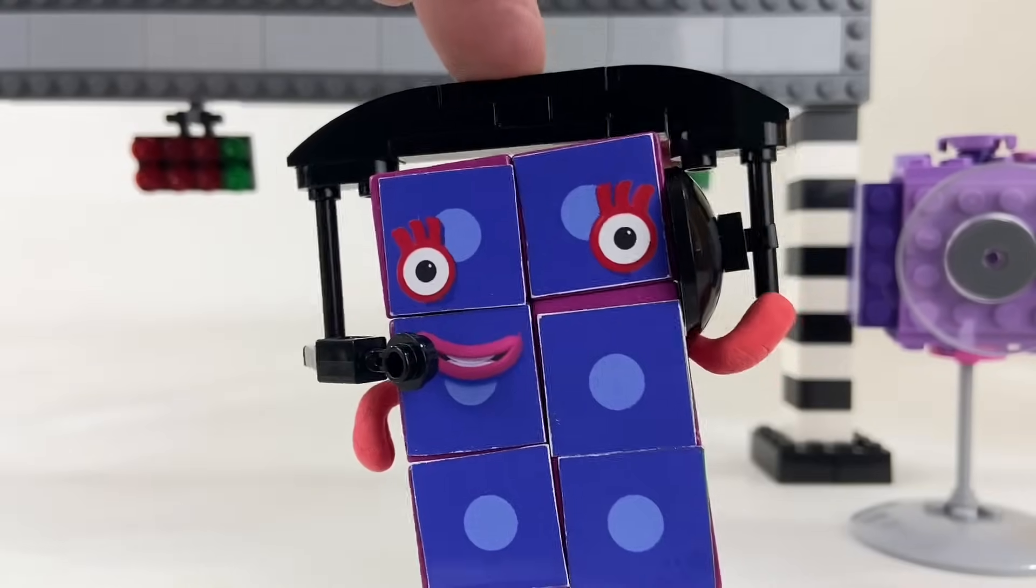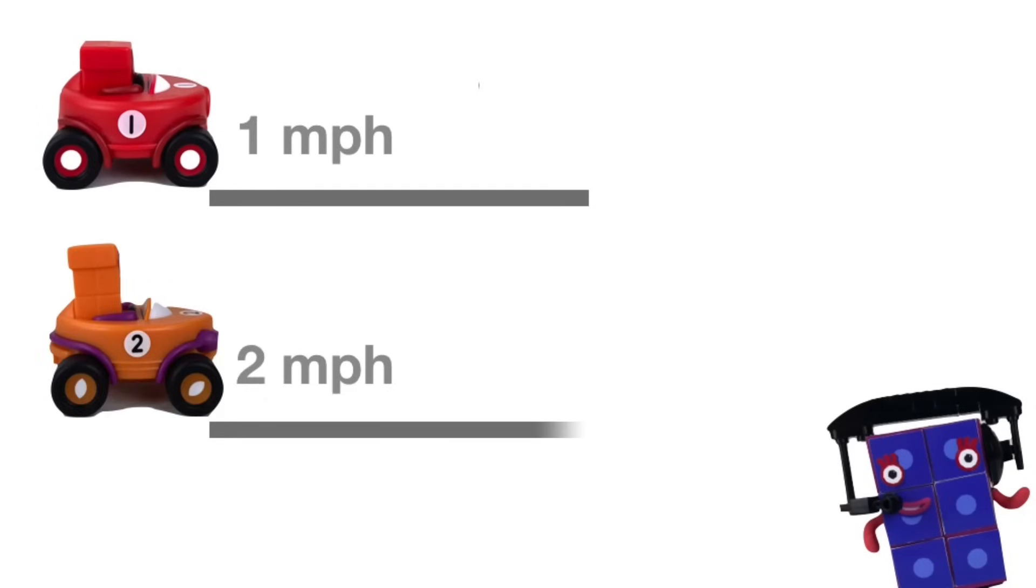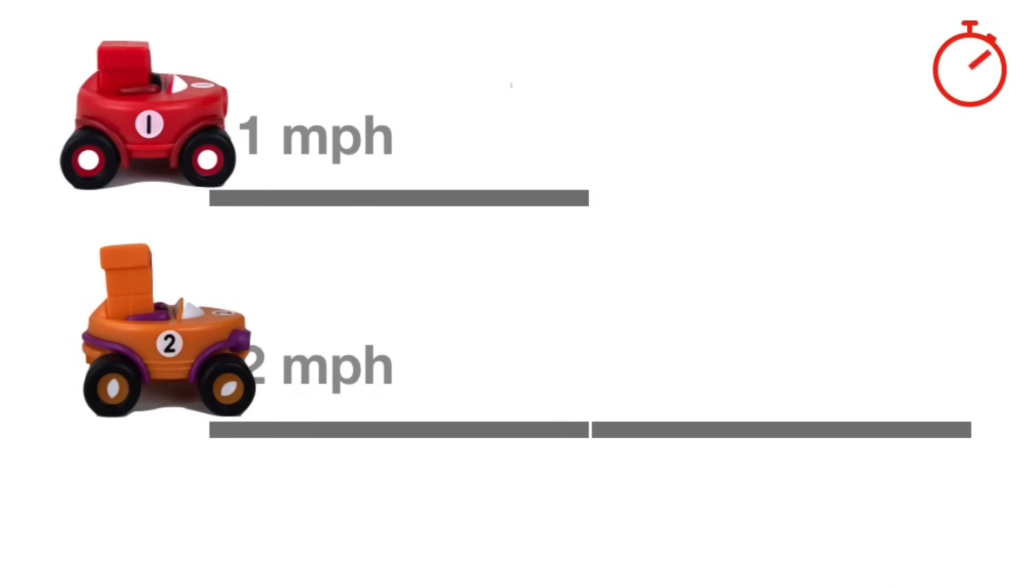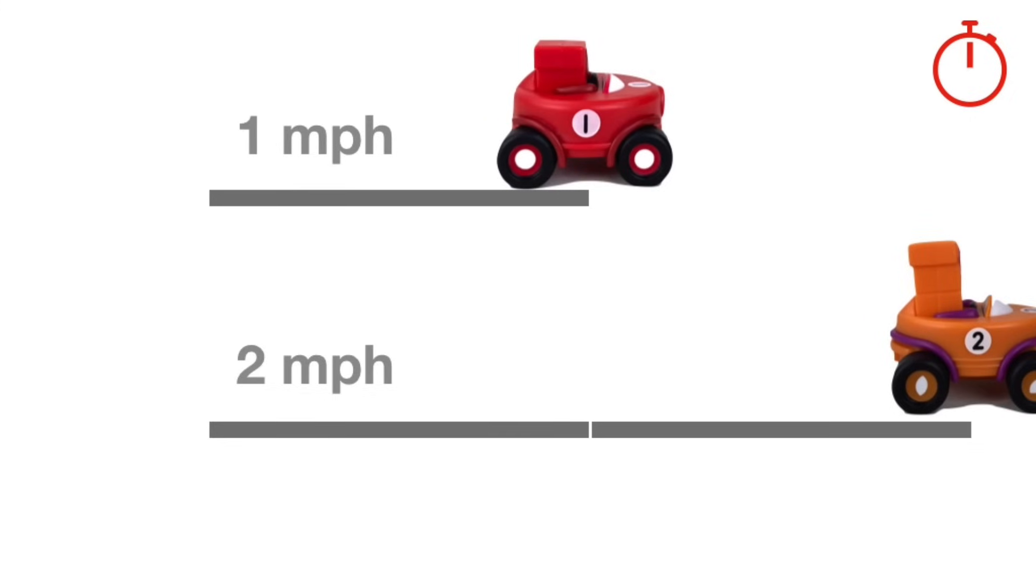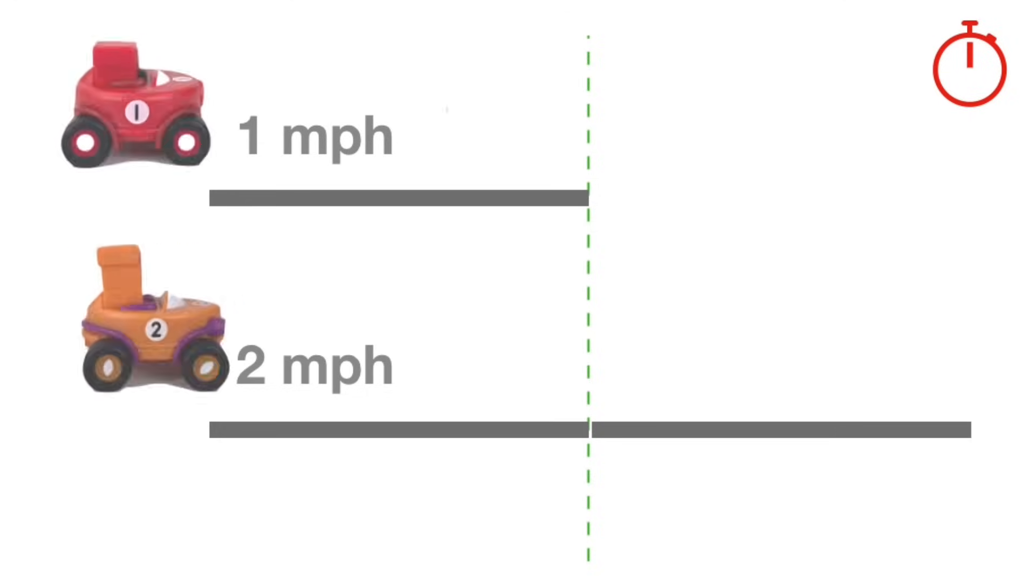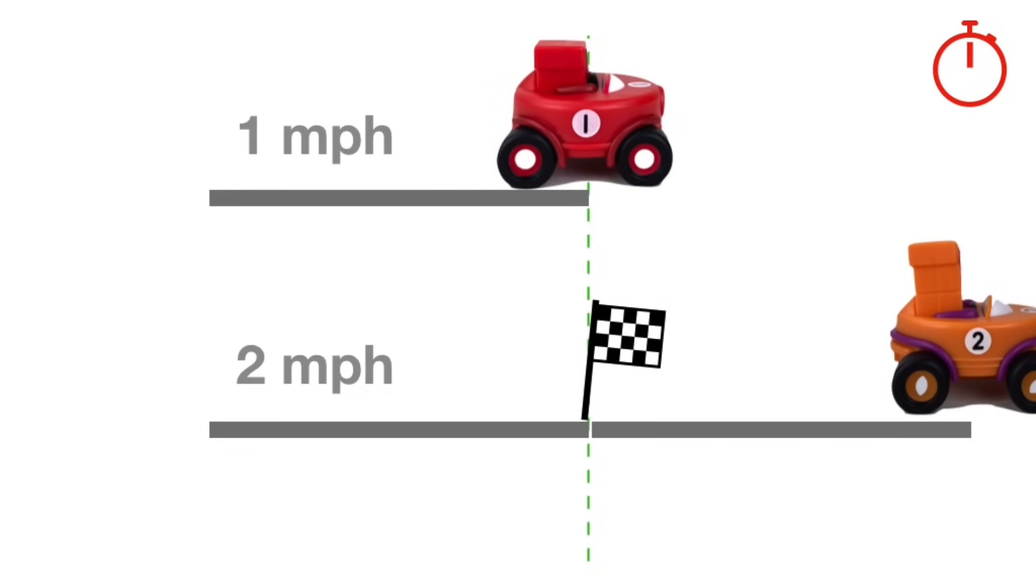Now let's take a closer look. One is traveling at one mile per hour while two is going at two miles per hour. That means after an hour, one has traveled a mile distance while two has traveled a longer distance at two miles. Because two is going faster, since this race is only one mile long, two can get to the finish line faster than one, so he wins the race.